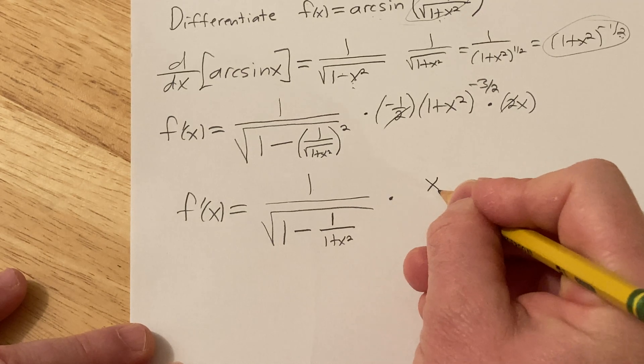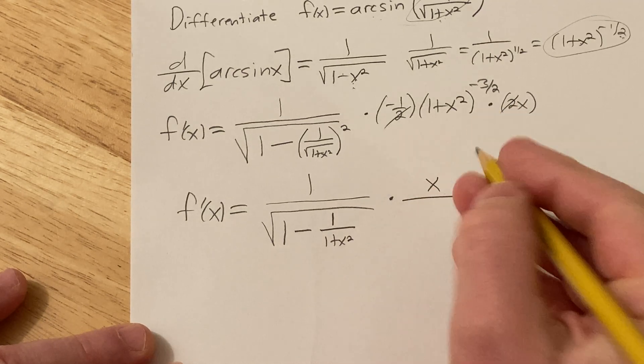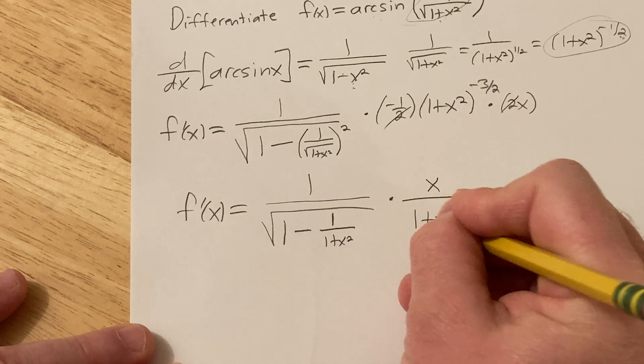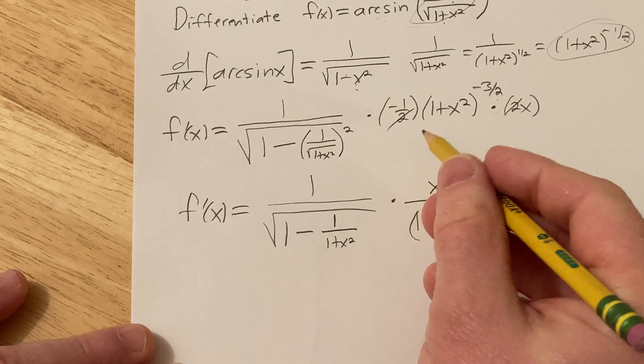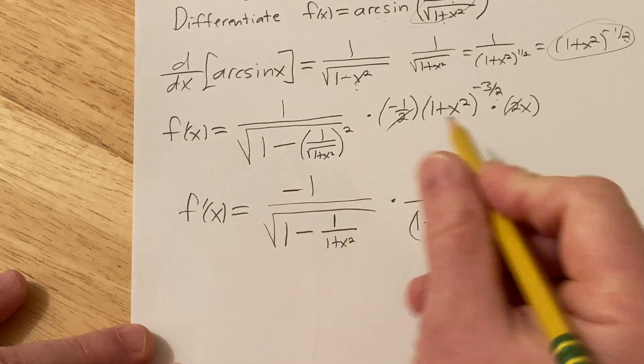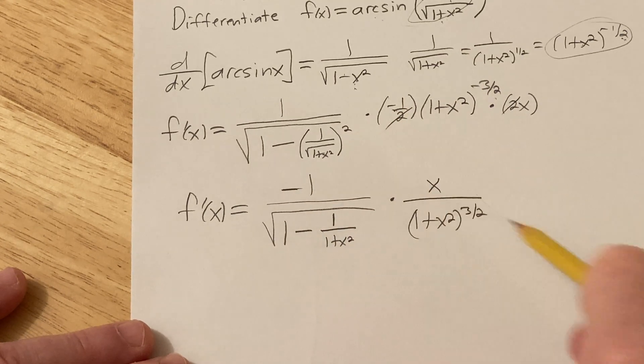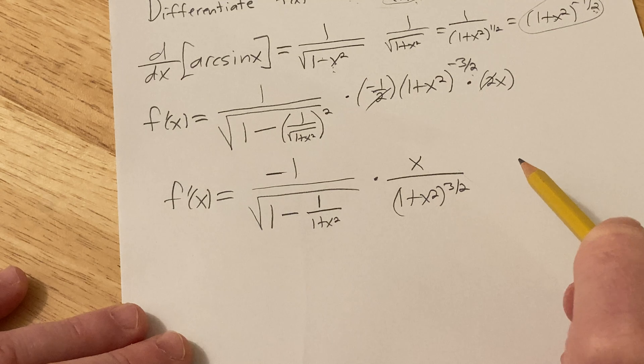And then times x over, let's bring this down, 1 plus x squared to the 3 halves, right, we'll bring it down and make it positive, and the negative, I'm just going to put it here, because there's a negative there. I just don't want to lose it, so I'll put it up front.